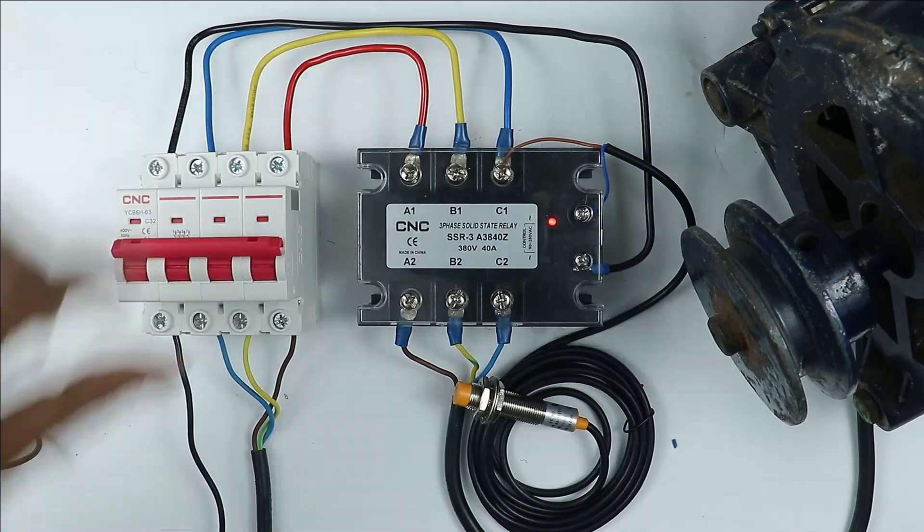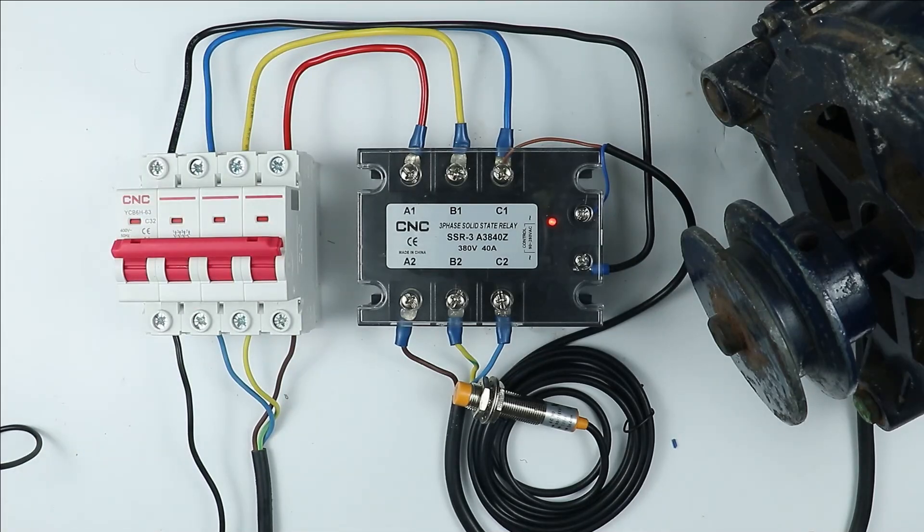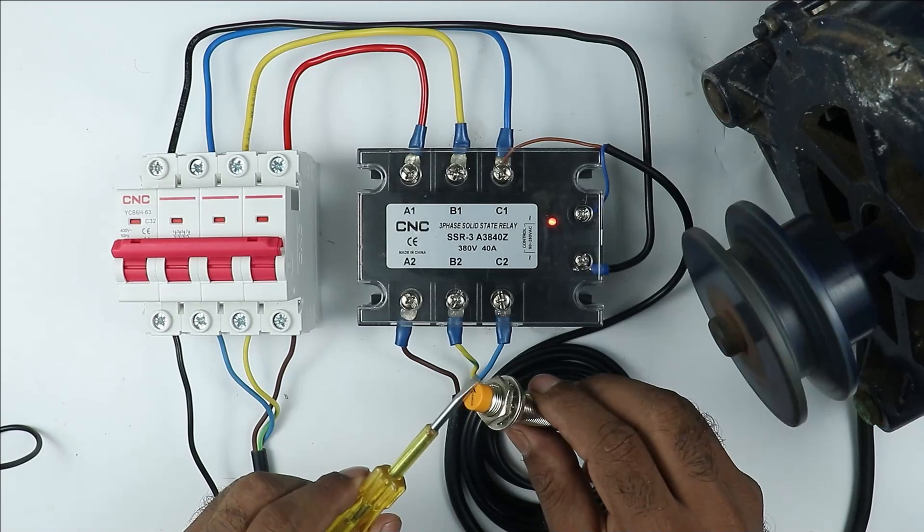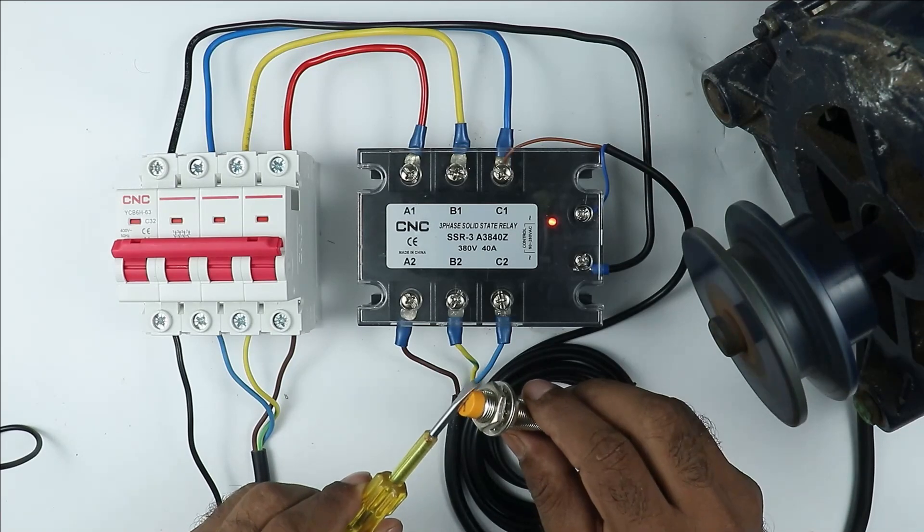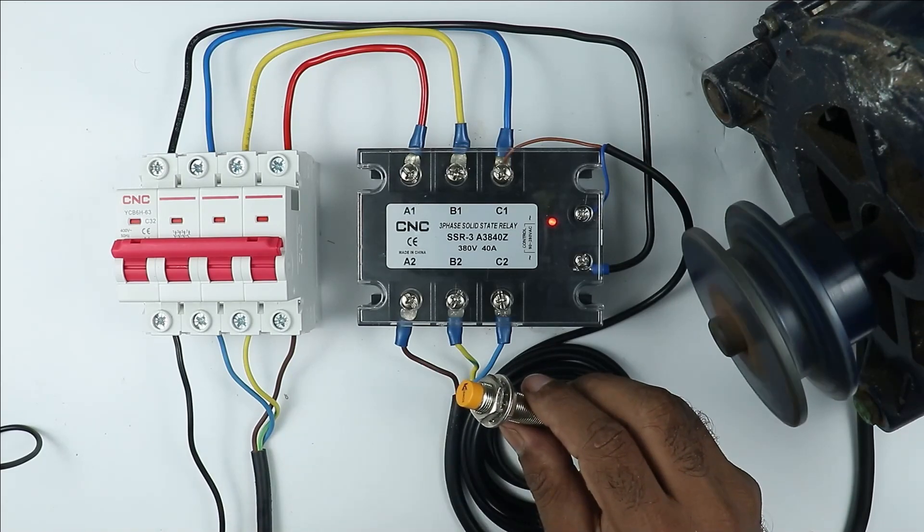Now I am turning on the MCB. After turning on MCB if I bring an object near to sensor then you can see motor is turned on. On removing object motor turns off.